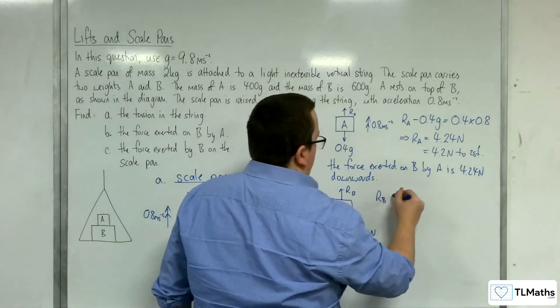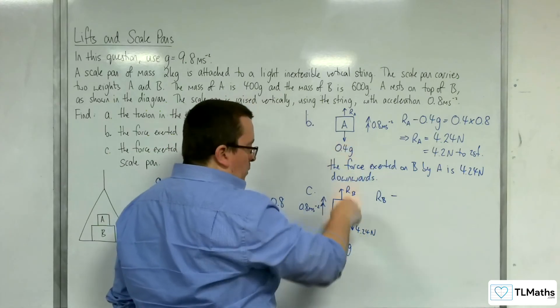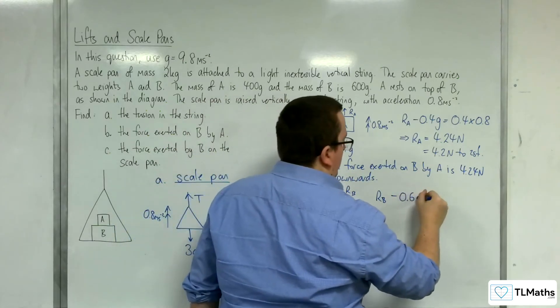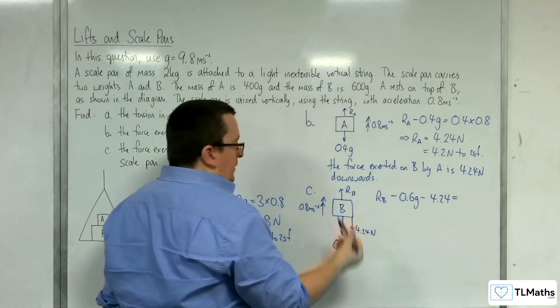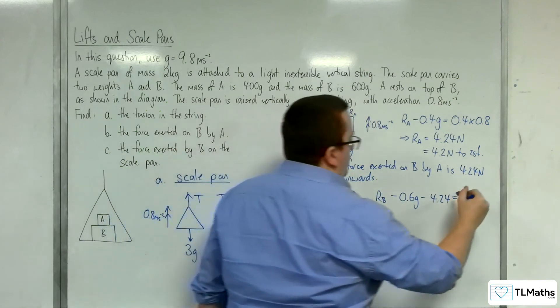So, R_B, so going upwards, take away 0.6g, take away 4.24. It's going to be equal to the mass, 0.6, times acceleration, 0.8.